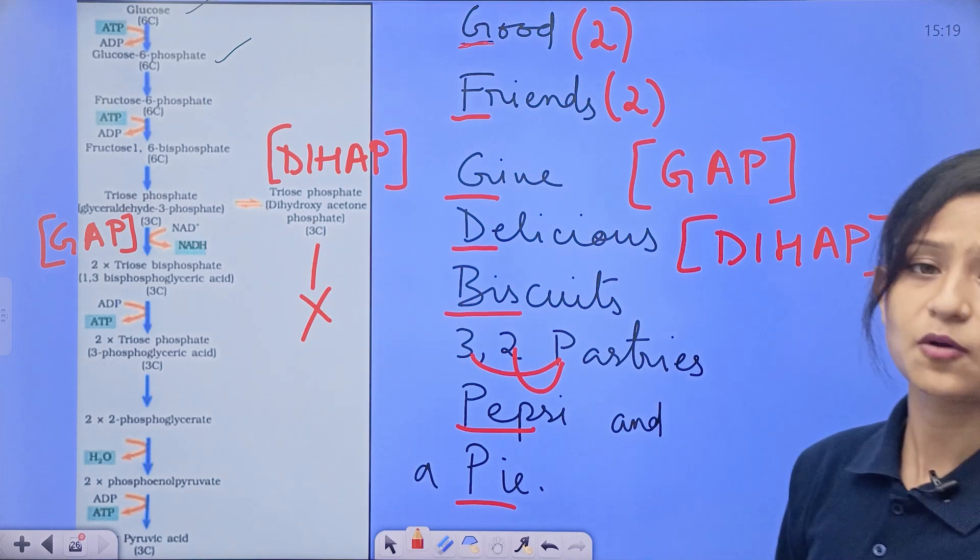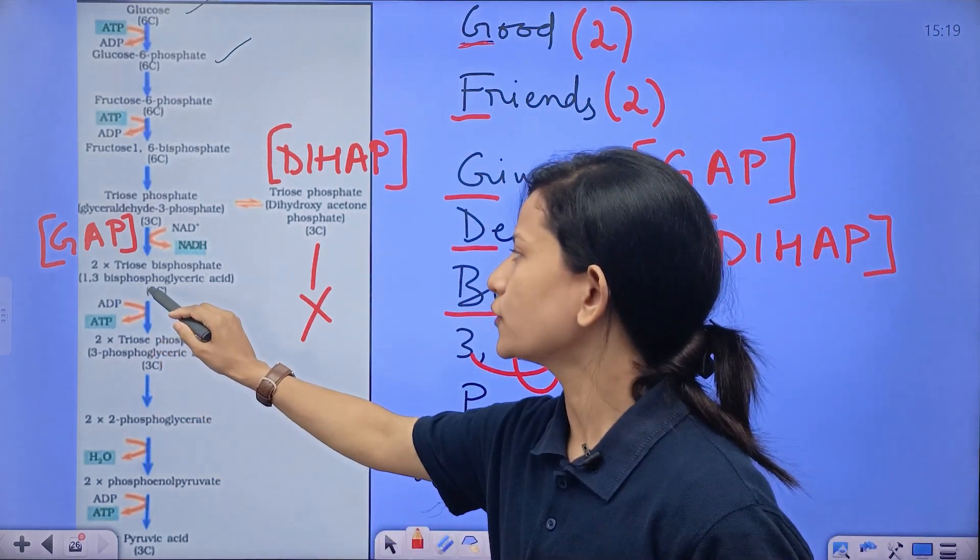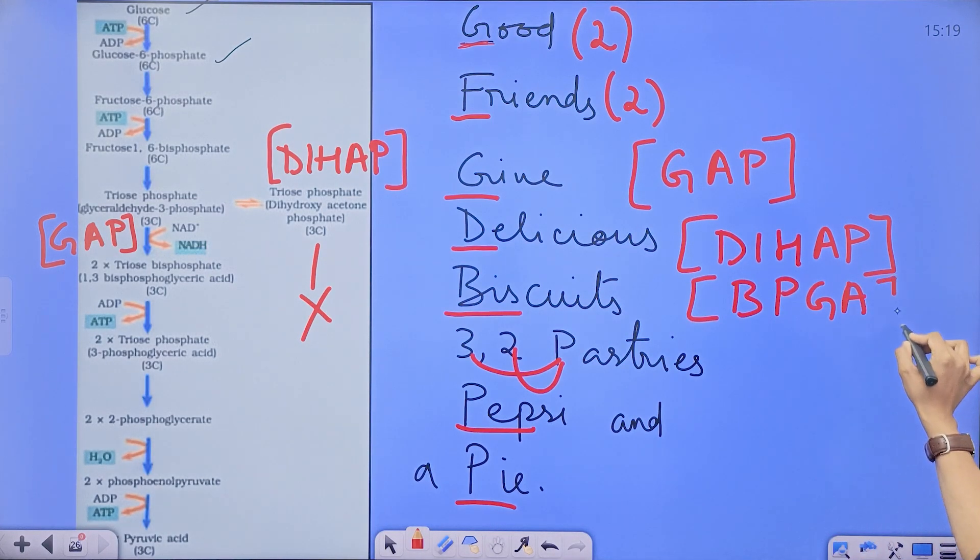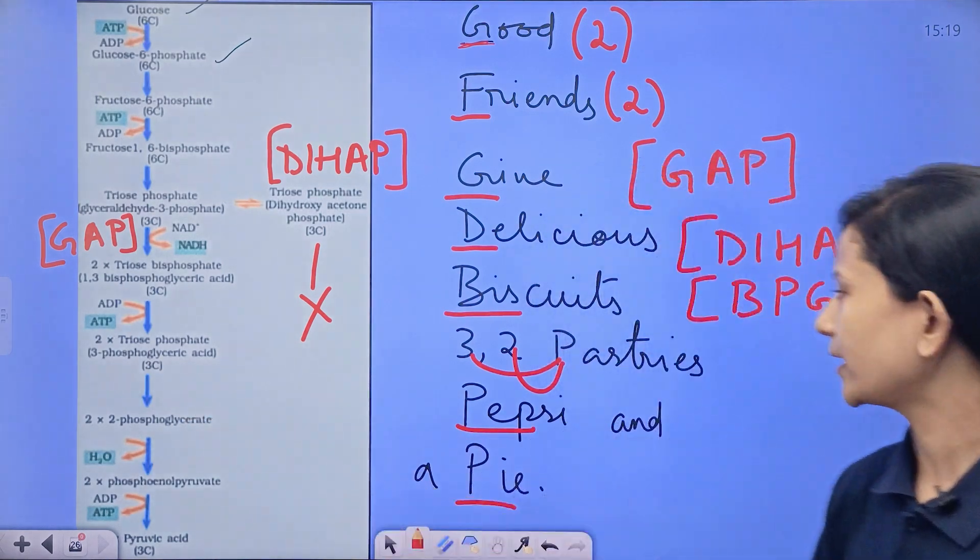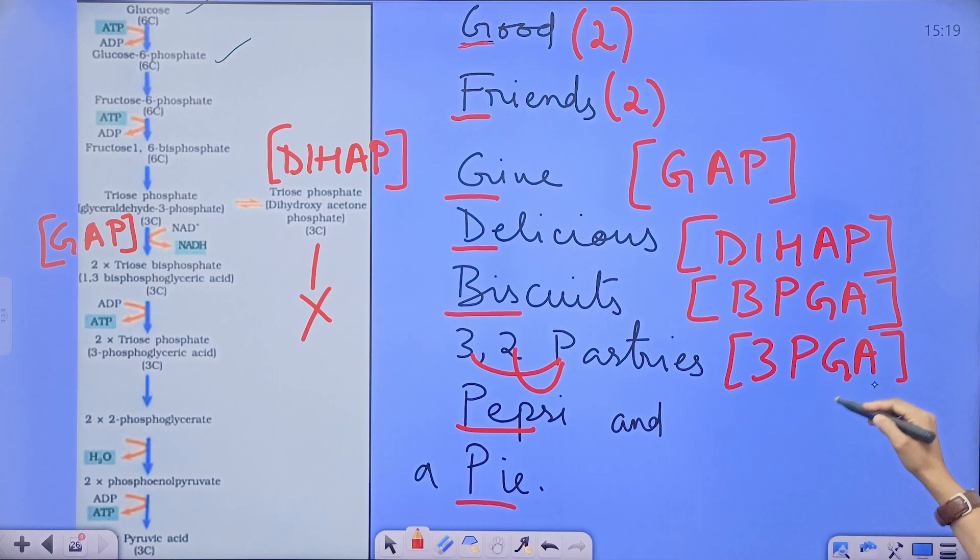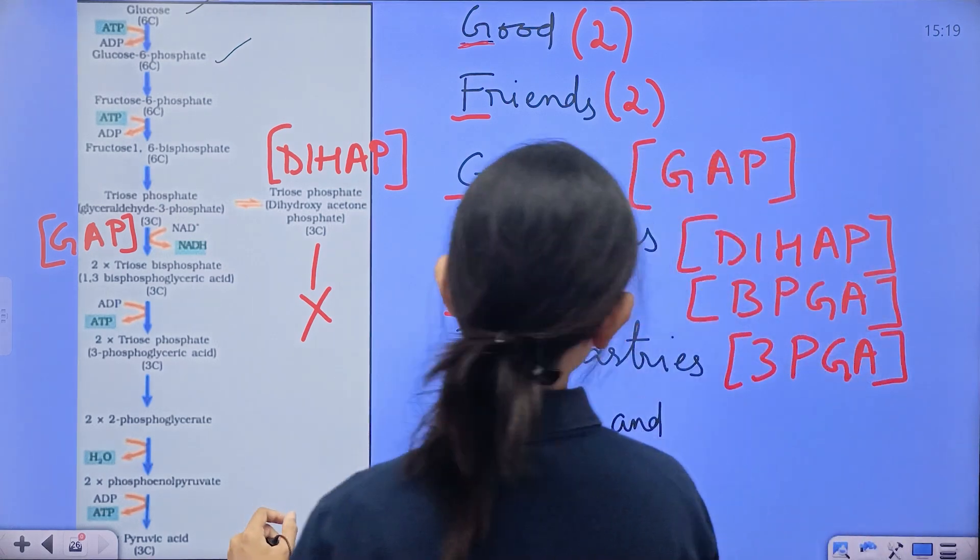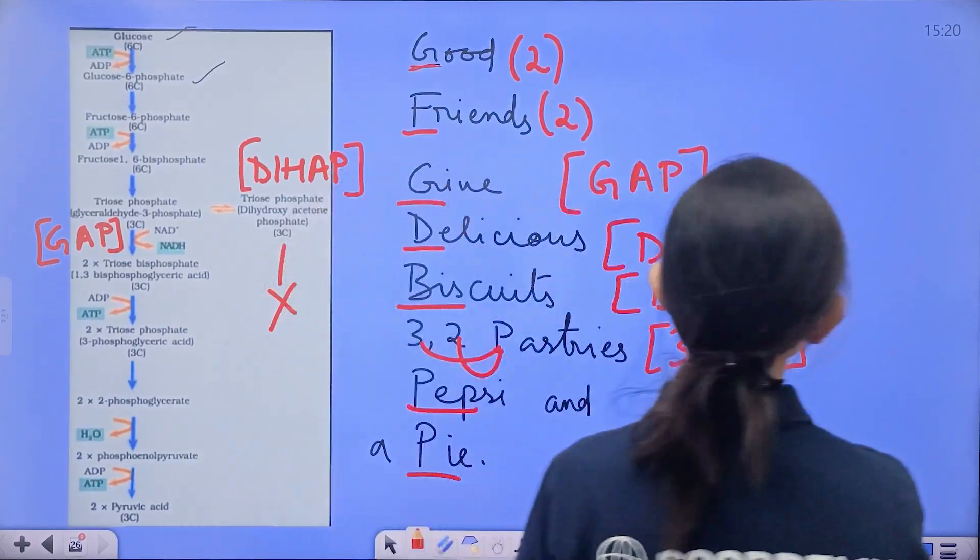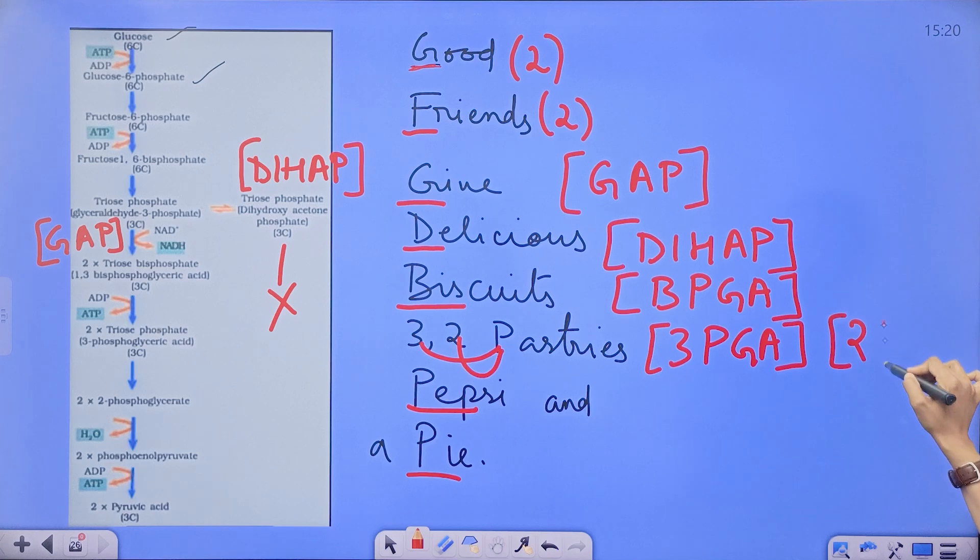Then biscuit: bis, 1,3-bis, 1,3-bisphosphoglyceric acid. 1,3-bisphosphoglyceric acid breaks down into 3-phosphoglyceric acid. So can I write down here 3PGA? 3PGA gives 2PGA, that is 2-phosphoglyceric acid. So I'm writing here 2PGA. 3PGA gives 2PGA, right?